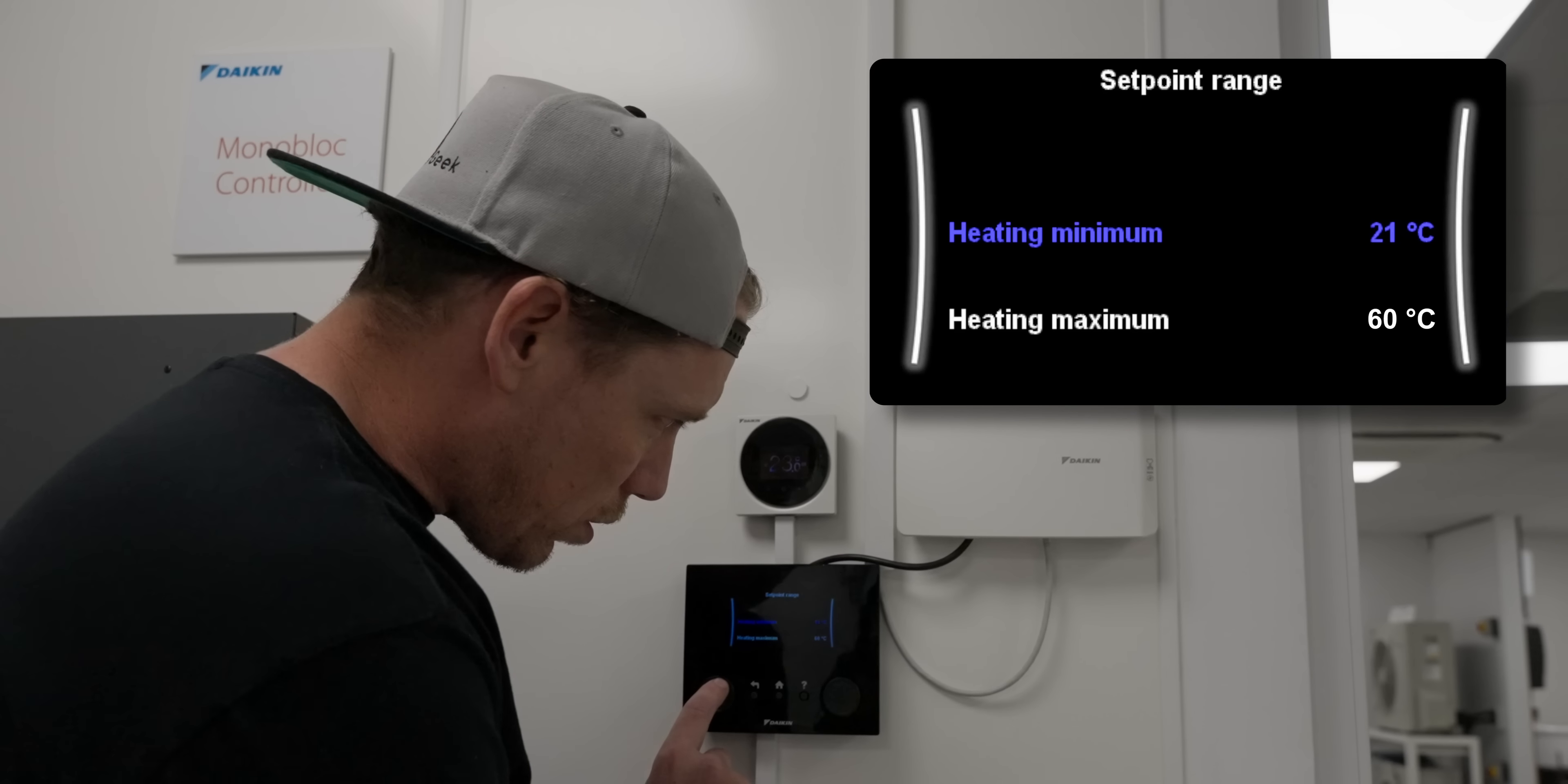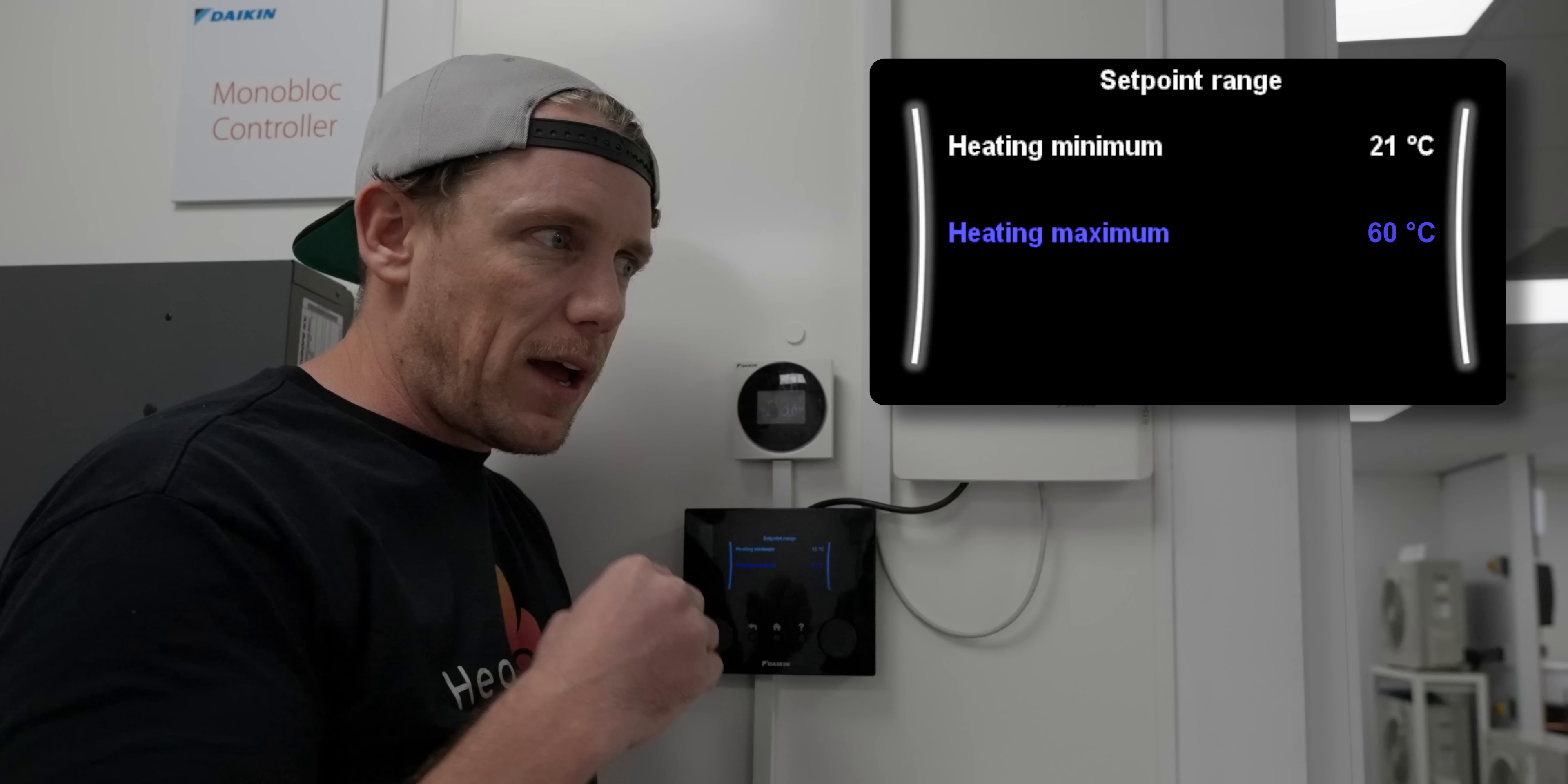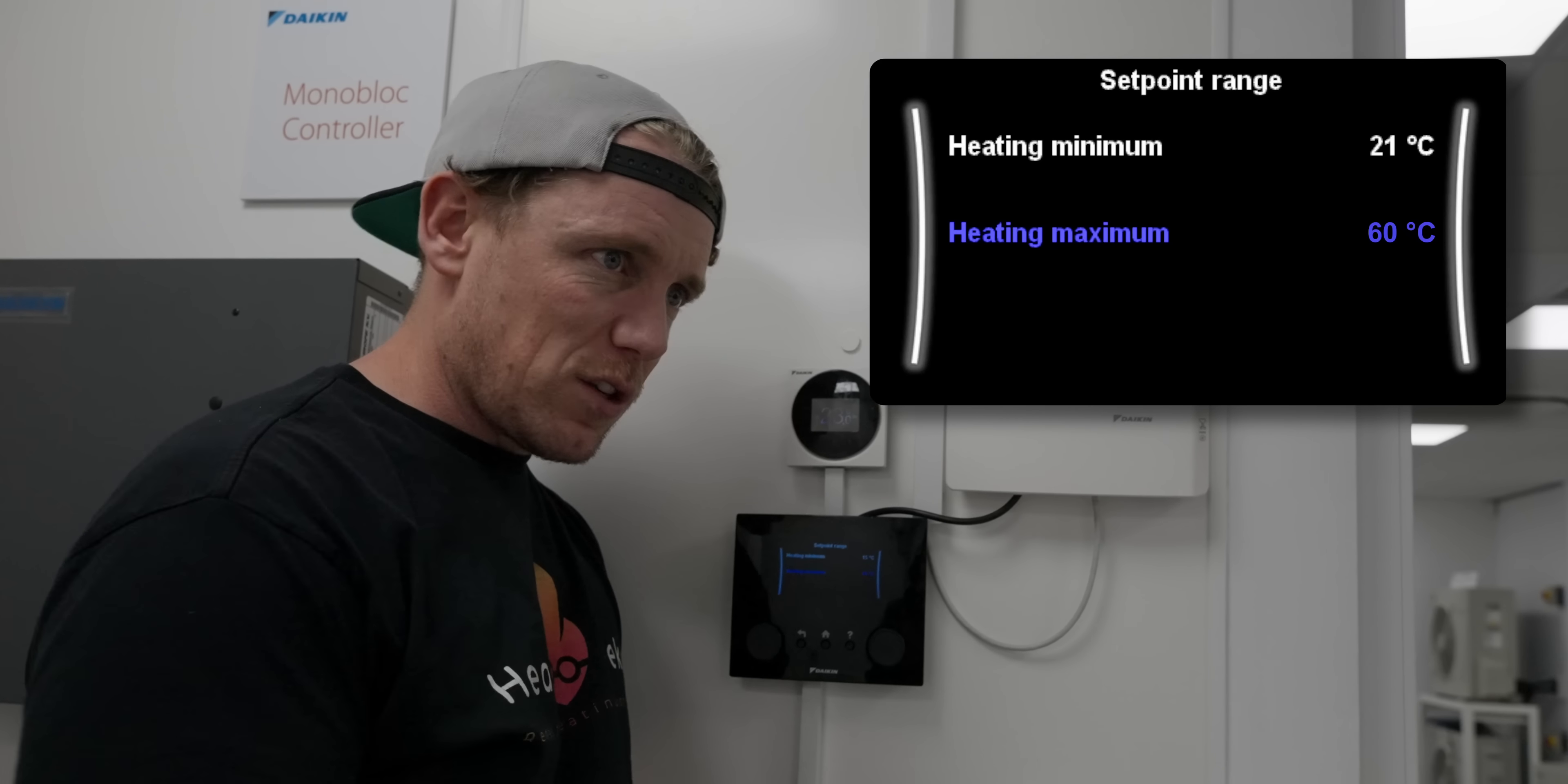Next, set point range. This is heating minimum, minimum flow temperature, maximum flow temperature. We don't need 60, so if we brought it back down from 60 that may help. But if your heat pump's oversized anyway, the cycles will be shorter. You can set it to whatever you wish, it doesn't matter because you've already set weather compensation, it's not going to see it anyway.